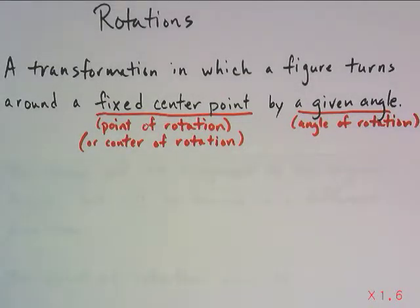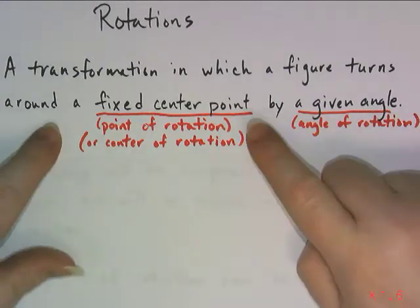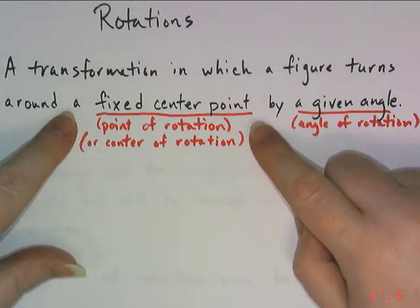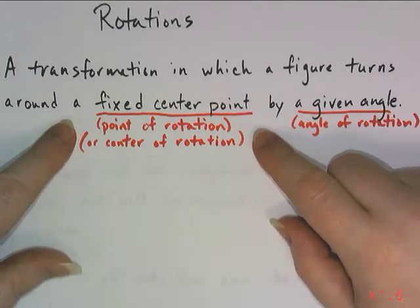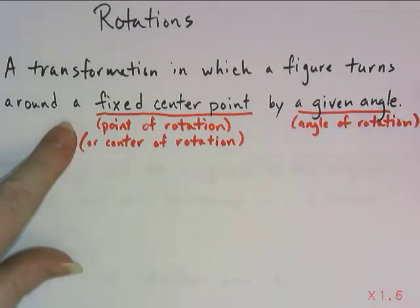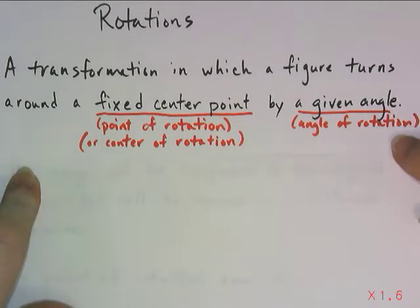This video is on rotations. The definition is a rotation is a transformation in which a figure turns around a fixed center point by a given angle. Notice each part of the definition has its own term. The fixed center point is the point of rotation, also called the center of rotation. We can use either of those terms. The angle that you rotate by is called the angle of rotation.